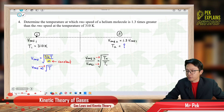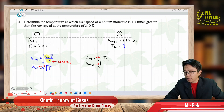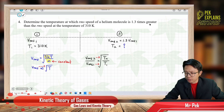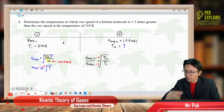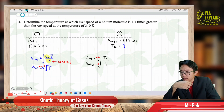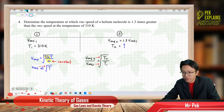Tutorial question 4. Determine the temperature at which the root mean square speed of a helium molecule is 1.3 times greater than the root mean square speed at a temperature of 310 Kelvin. So what I need to find is a temperature given another temperature.